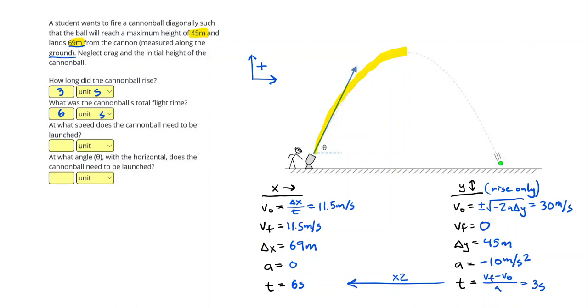This is at what speed does the cannonball need to be launched? We actually don't have this answer yet. What we need to do is do our trigonometry. In this case, we were working backwards, so our trigonometry came at the end. So I'm going to label my triangle, hypotenuse, adjacent, and opposite sides. The horizontal is 11.5 for the initial velocity. It's my initial velocity triangle. And the vertical is 30 meters per second.